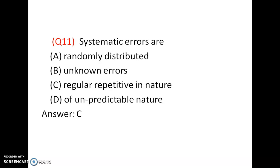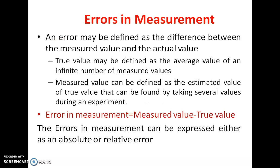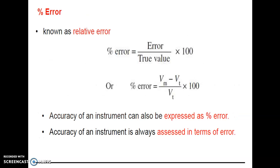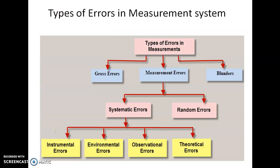Errors can be of different types: systematic errors and random errors. Error is measured value minus true value. Percentage error is (measured value minus true value) divided by true value, multiplied by 100.